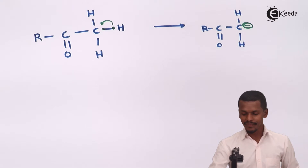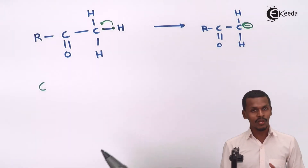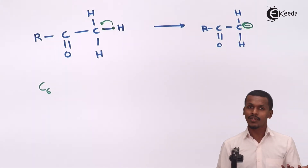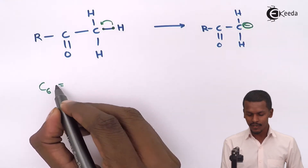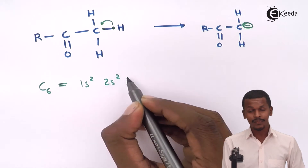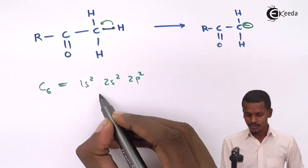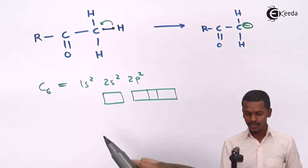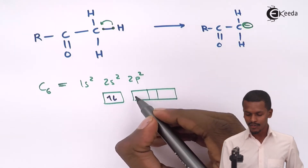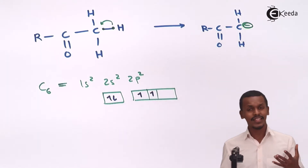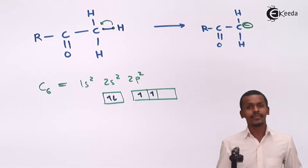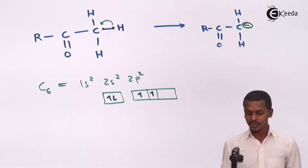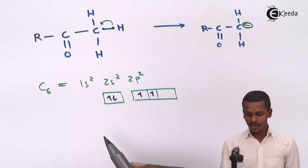To understand the hybridization, consider the carbon atom. According to its electronic configuration: 1s², 2s², 2p². These orbitals are filled following Hund's rule. Since carbon is attached to three atoms in the carbanion, we need to consider excitation of the orbitals.